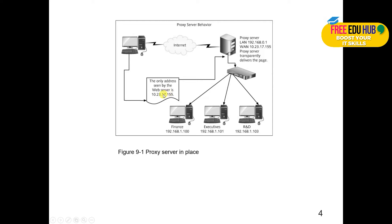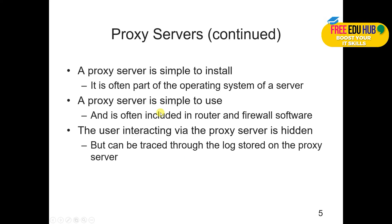The only address seen by the web server is 10.23. You can see the proxy server has changed the IP address for the LAN to 192.168.0.1, whereas on the WAN it was 10.23.17.25. Your inside users would have 192.168.1.100, 101, 103, depending on what kind of network is within the organization. So the IP address is completely different within the network compared to the external network.